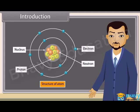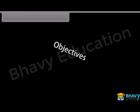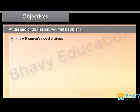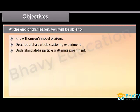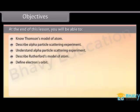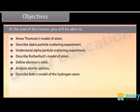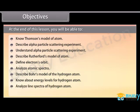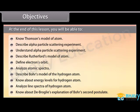Objectives: At the end of this lesson, you'll be able to know Thomson's model of the atom, describe the alpha particle scattering experiment, understand Rutherford's model of the atom, define electron orbits, analyze atomic spectra, describe Bohr's model of the hydrogen atom, know about energy levels of the hydrogen atom, analyze the line spectra of the hydrogen atom, and know about De Broglie's explanation of Bohr's second postulate.